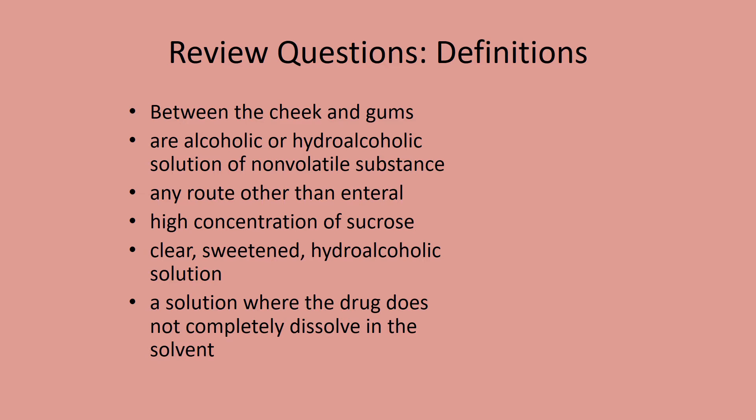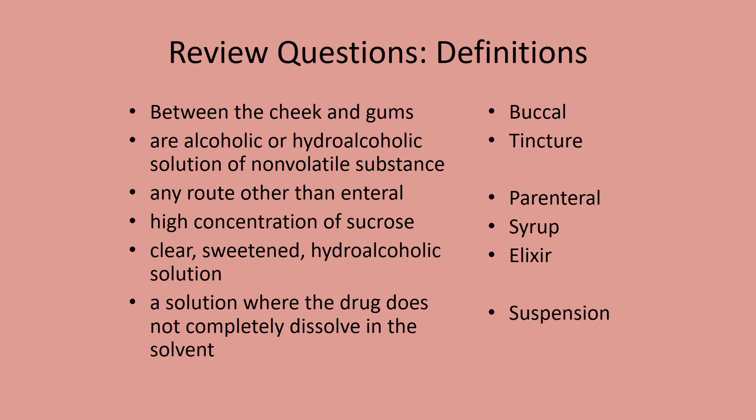Some definitions review. The term for between the cheek and gums is buccal. The dosage form that is alcoholic or hydroalcoholic made of a non-volatile substance — key term non-volatile — is a tincture. Any route other than enteral — besides or next to the intestines — is parenteral; the prefix para means next to. High concentration of sucrose describes a syrup. Clear, sweetened, hydroalcoholic — that key term points to an elixir. Not completely dissolved or a semi-solid dosage form describes suspensions — make sure you affix the shake-well sticker on all suspensions.